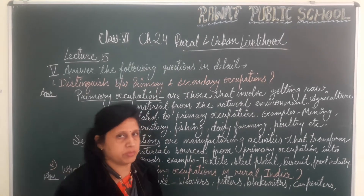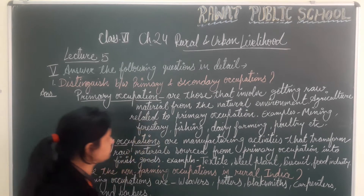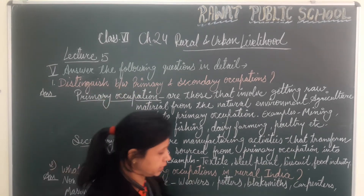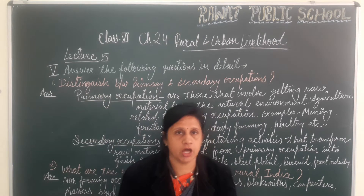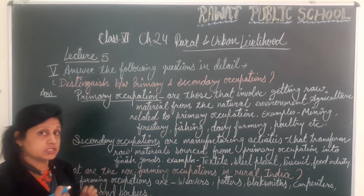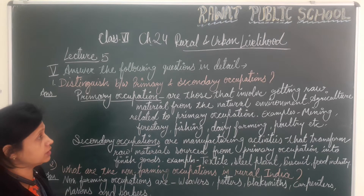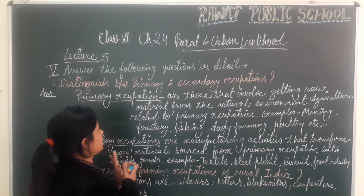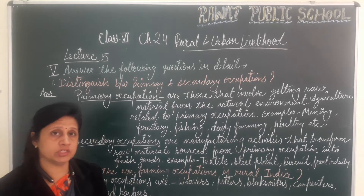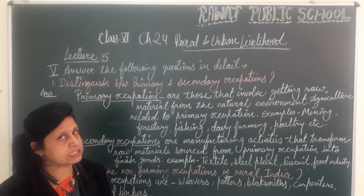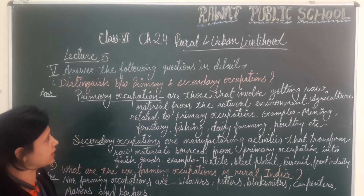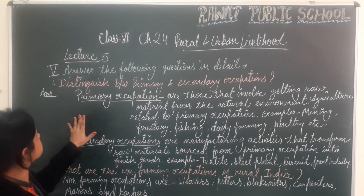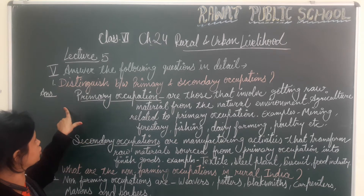We have discussed all the topics very nicely. So this is your question number 5 — answer the following questions in detail. The whole summary is given in the question answer, so the entire chapter will be revised once through the question answers. So the first question of your book, the first question of number 5 is: